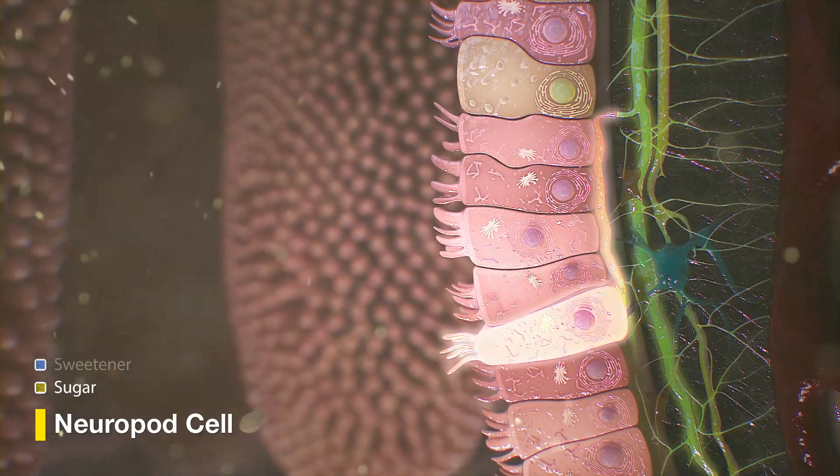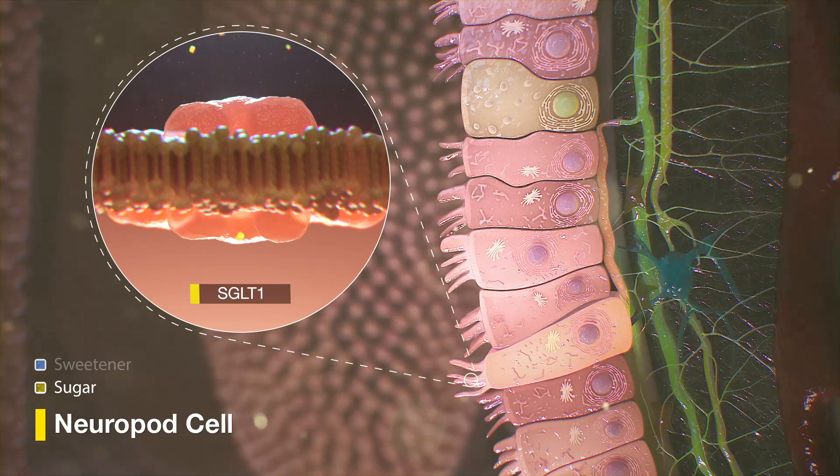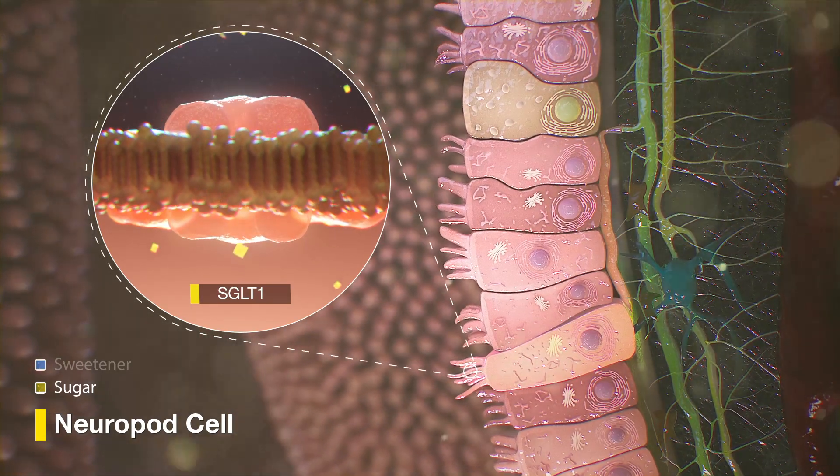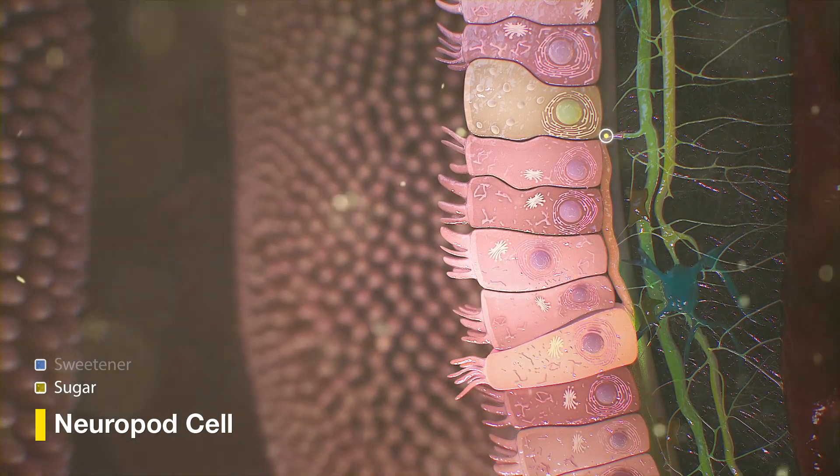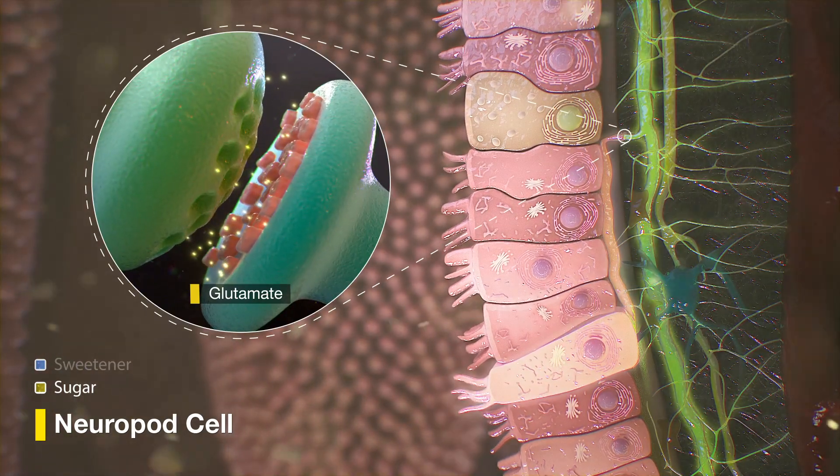But sugars are sensed differently. Neuropod cells sense sugars using SGLT1, an electrogenic sodium glucose transporter. When glucose enters through SGLT1, neuropod cells release the neurotransmitter glutamate.